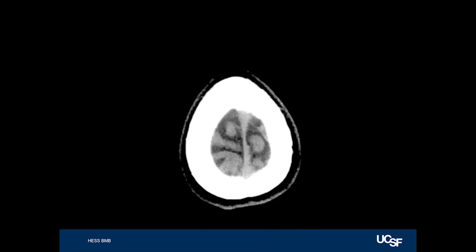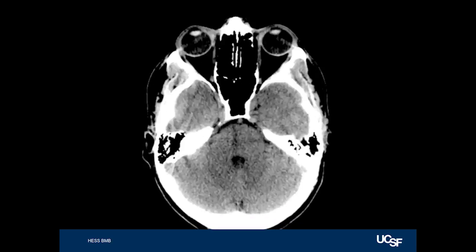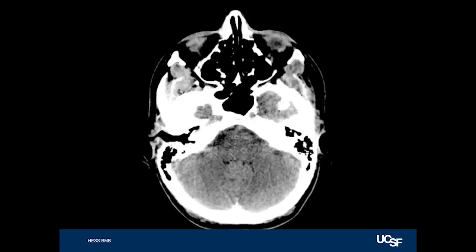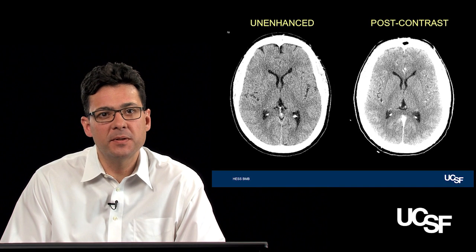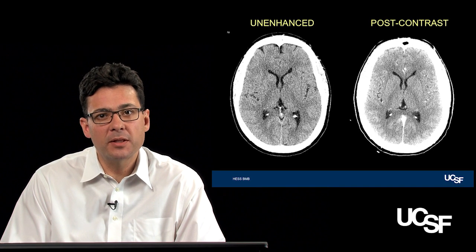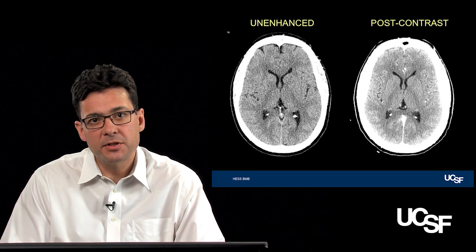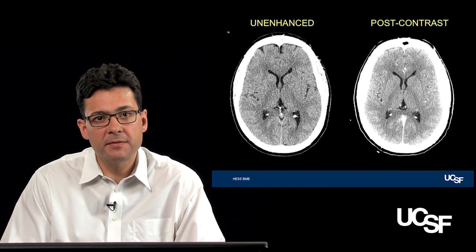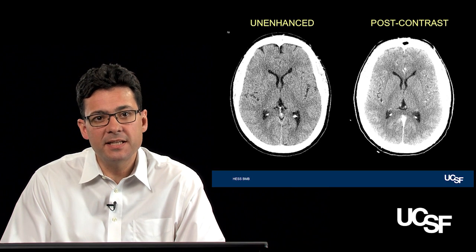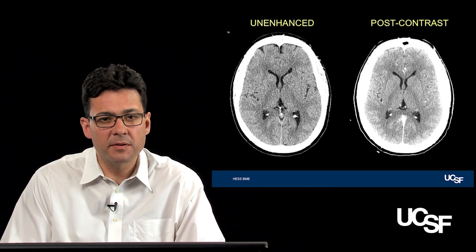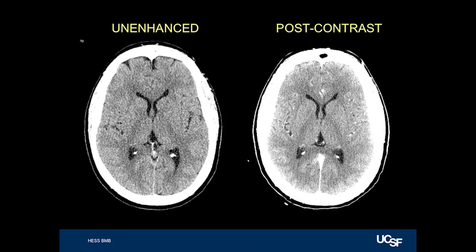Once the CT scan is done, you end up with a stack of images that can be reviewed for abnormalities. I'm showing you two images: the image on your left is an unenhanced image, and the image on your right is a post-contrast image. Let's focus first on the unenhanced image, showing you the different densities. It's clearly a nice depiction of the brain, but if you look very carefully, there's very little contrast between different structures.